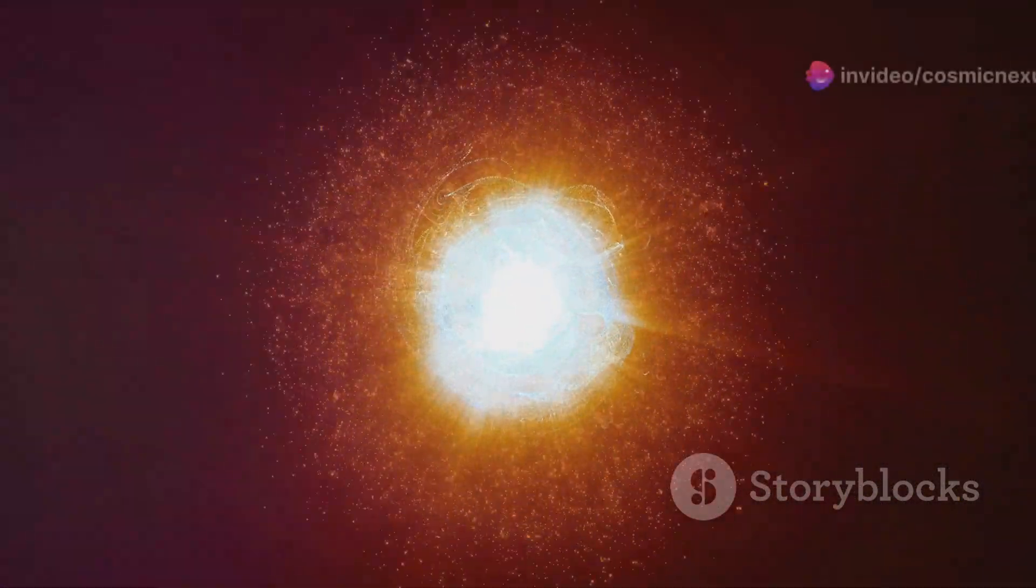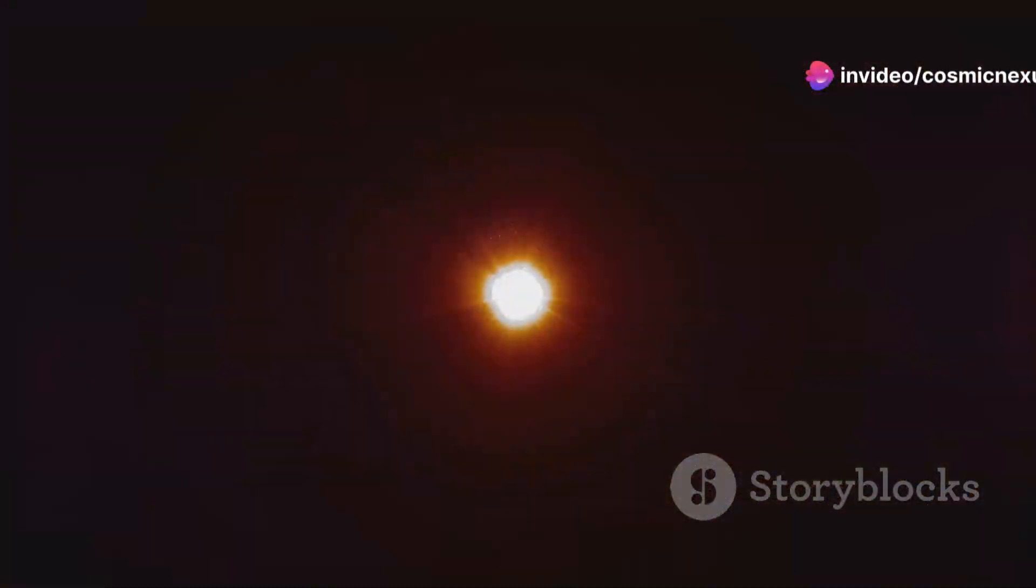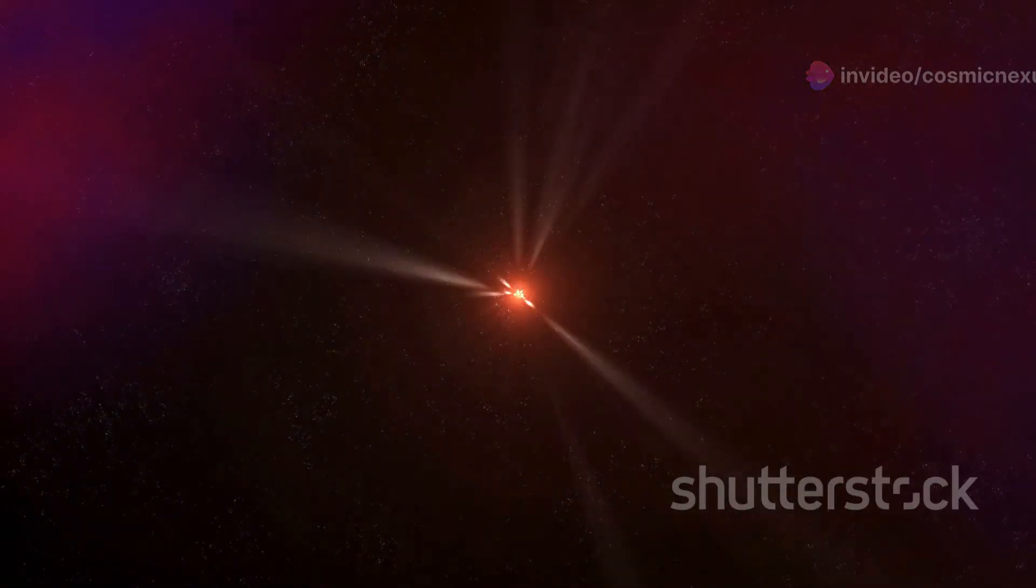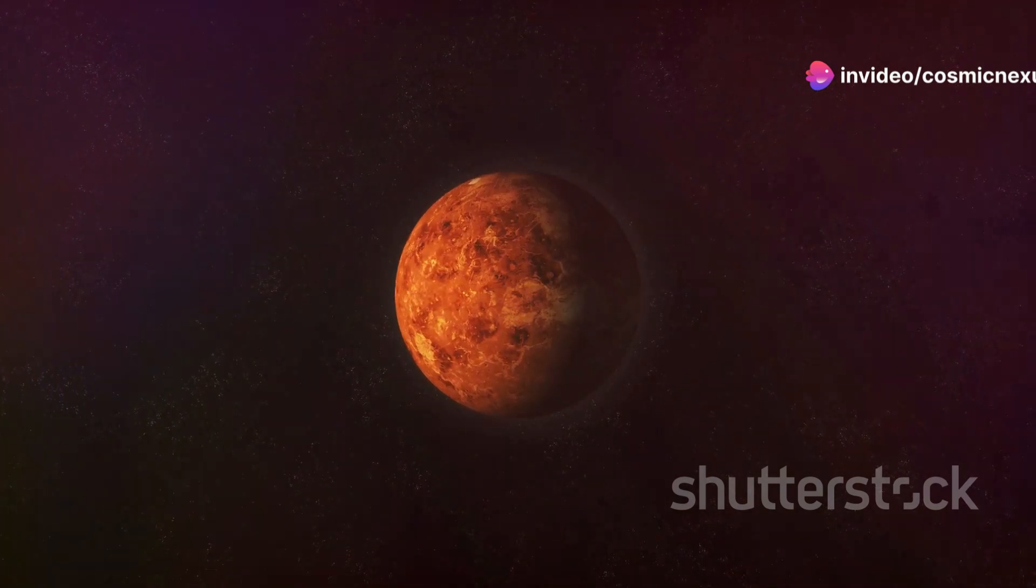As red supergiants age, they experience periods of instability, with their outer layers pulsating in and out. These pulsations are driven by changes in the star's internal structure and energy output. Over time, the star's outer layers expand and contract, leading to fluctuations in brightness that can be observed from Earth.